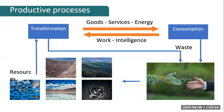For a process engineer, it's important to understand this circle. Essentially, everything we do starts from natural resources — through mining and materials extraction — and through a transformation process, we transform those into goods and services. Materials and energy are consumed in this process.